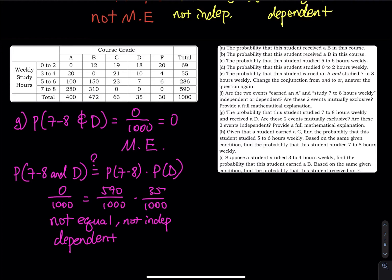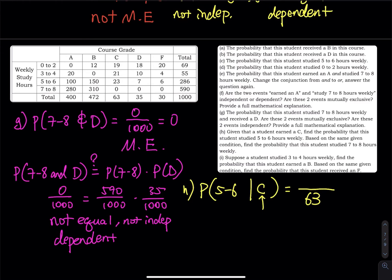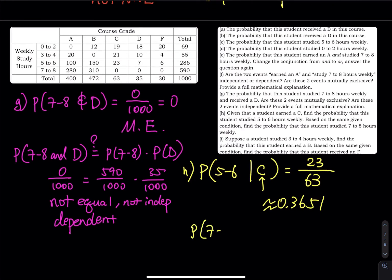Part H: Given that a student earns a C, find the probability they study 5 to 6 hours weekly. Since we know it's a C, we put the total number of Cs — 63 — in the denominator. We are locked in column 3. Within column 3, how many studied 5 to 6 hours? That is 23. So 23 divided by 63 ≈ 0.3651. Based on the same given condition, find P(7 to 8 | C). We are locked in the C column again. Within that column, 7 to 8 is 0, so the probability equals 0.